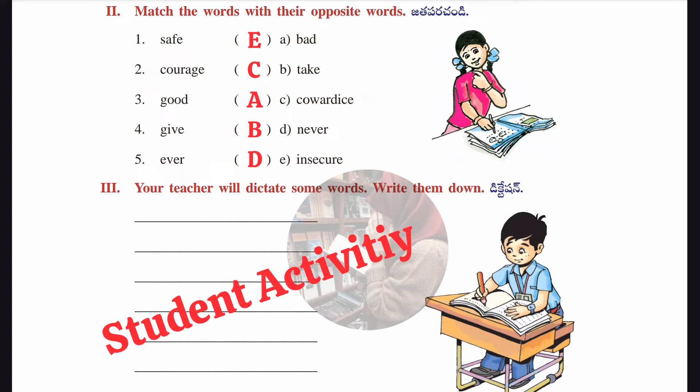The second section of worksheet 4.4: match the opposite words. Column A words matched to Column B: safe → E (insecure); courage → C (cowardice); good → A (bad); give → B (take); ever → D (never). So the answers are E, C, A, B, D.